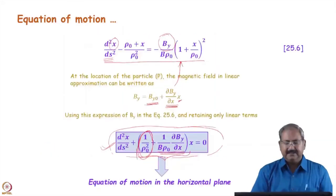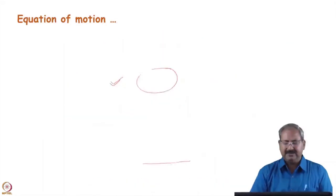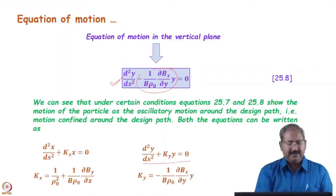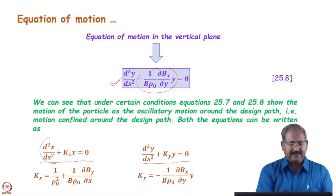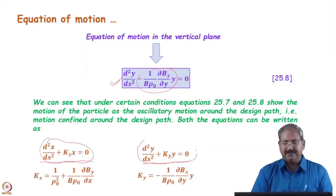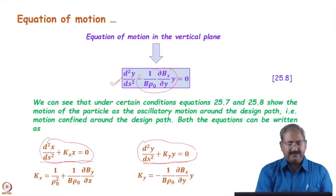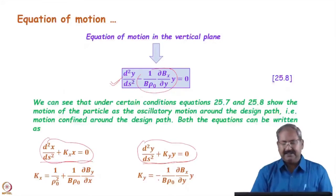Similarly, this quantity can be written as kx, so our equation of motion will be d²x/ds² + kx·x = 0. These equations are similar to the simple harmonic oscillator equation in both the horizontal and vertical planes. Here, kx = 1/ρ² + (1/Bρ₀)·(∂B/∂x), and in the case of the vertical plane, ky = −(1/Bρ₀)·(∂B/∂x).